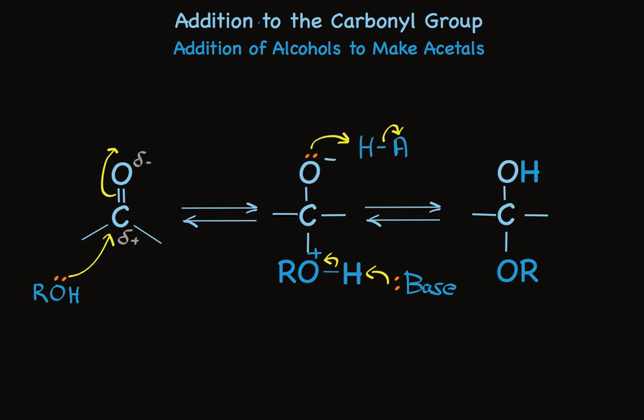When the nucleophile is an alcohol, that equation looks like this. The electron pair from oxygen forms a new bond with the carbon as the pi bond breaks. The negative charge is formed on oxygen, while a positive charge is formed on the oxygen from the alcohol. Proton transfer to the oxygen of the carbonyl group and proton loss from the oxygen of the alcohol finishes the addition. In practice, this takes two steps. The compound in this form is called a hemiacetal.